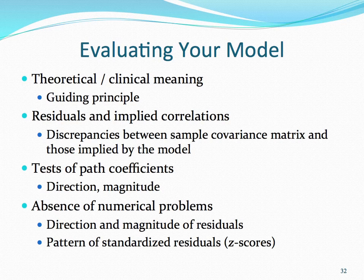When evaluating your model, it is also important to look at the residuals and implied correlations. This information can be found on printouts of AMOS as well as in LISREL, and these look at the discrepancies between the sample covariance matrices — the covariances from your data — and those implied by your model. Typically, when we see residual values greater than plus or minus two standard deviations, this causes concern and requires further investigation. When evaluating a model, we must also look at the path coefficients between the different variables — the direction and magnitude of those beta values — and see if they are consistent with theory and with previous literature.